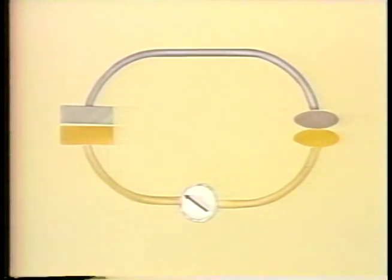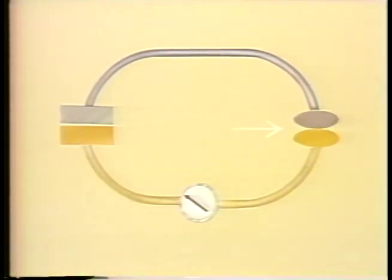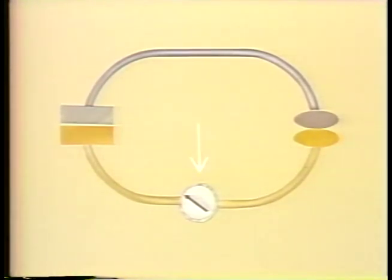We can see one application of this principle by looking at a simplified diagram of a thermocouple. A thermocouple consists of two wires made of dissimilar metals which are joined together. Where the two metals are joined is called the hot or measuring junction. The other end of the wires complete an electrical circuit at the cold or reference junction. When heat is applied to the measuring junction, one metal gives up electrons while the other accepts electrons, and a current flow is produced. The current flow is proportional to the temperature difference between the reference junction and the measuring junction.